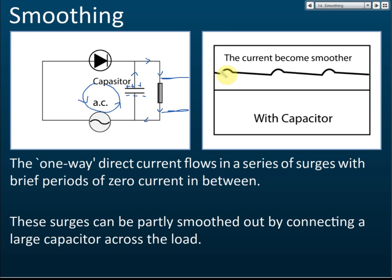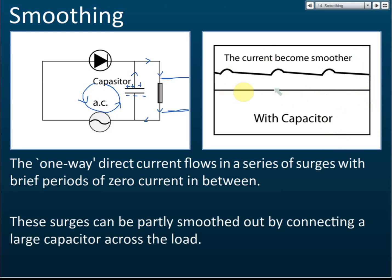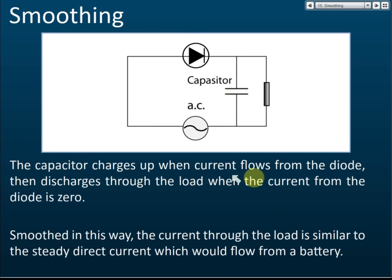So the cycle works like this: the capacitor charges up, then releases its charge, then charges again, then releases again. This successfully converts a non-steady direct current — which had gaps of no current — into a steady direct current. This process is called smoothing. The capacitor charges up when current flows from the diode, then discharges through the load when current from the diode is zero. The resulting current through the load is similar to a steady DC from a battery — almost a straight line.